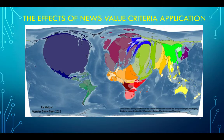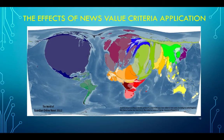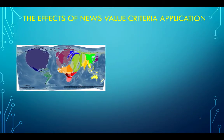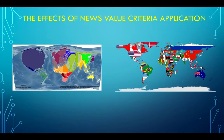Here we have a map of the world according to the coverage of the Guardian online news in 2012. You can clearly see that the amount of coverage that countries like the United States attract is bigger than their geographic size, while countries much larger geographically attract smaller coverage. The criterion for news value in this case is not the population or geographic size of a country, but its importance and influence in the world, according to the editors of the Guardian online.